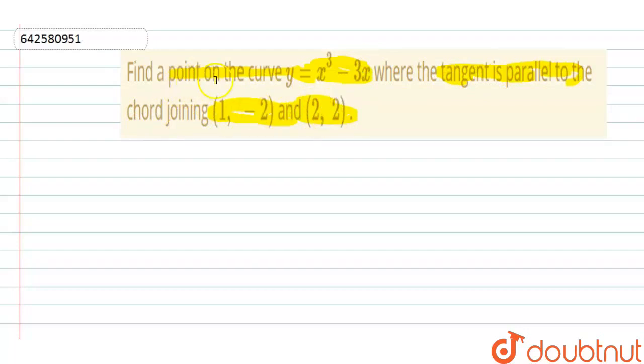So basically, we have to find the point on the curve where the tangent is parallel to the chord joining these points. So the slope of both the curve and this chord are going to be equal.